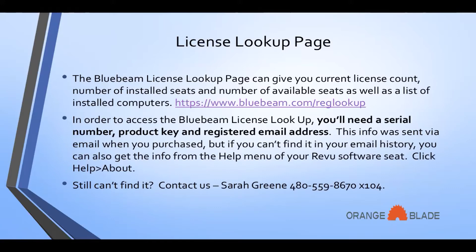If you can't find it in your email history, you can also get the info from the help menu of your review software seat by clicking Help and then About. If you still can't find it, contact us. I am Sarah Green, 480-559-8670 extension 104, but anybody who answers the phone here at Orange Blade can help you as well.